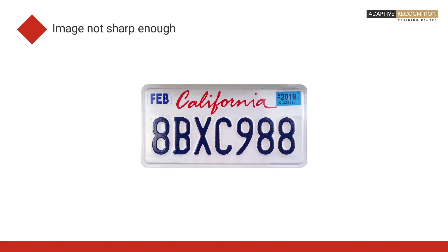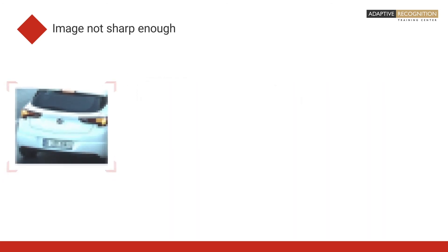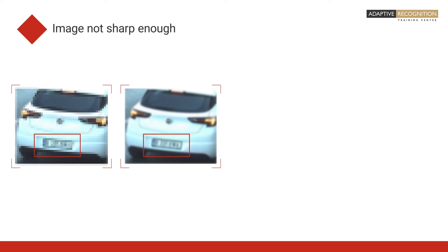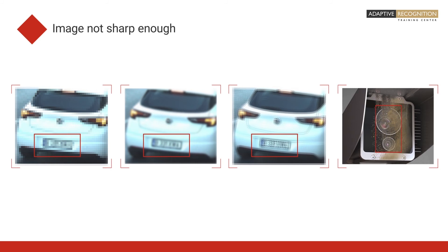Having adequately sharp images is also crucial. An image that is not sharp enough is referred to as blurred. Blurring can be caused by various factors like small character size, inappropriate focus, motion of the vehicle during shutter time, and even by a dirty lens on the camera.